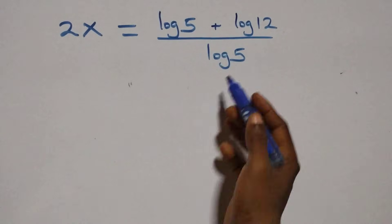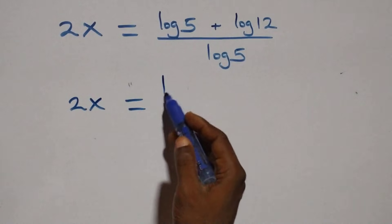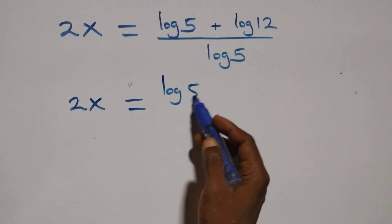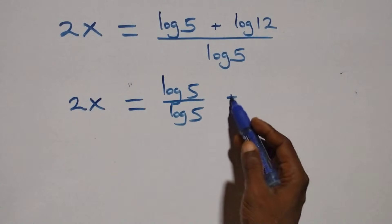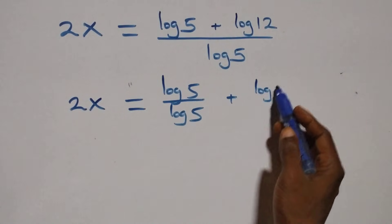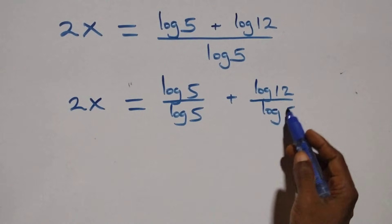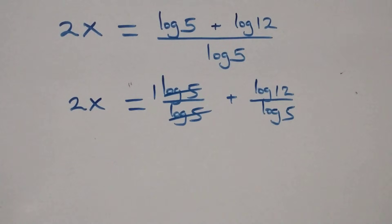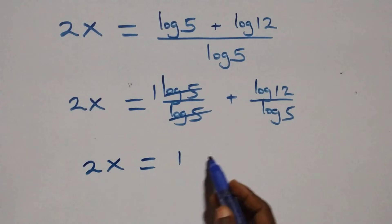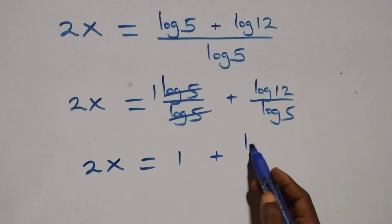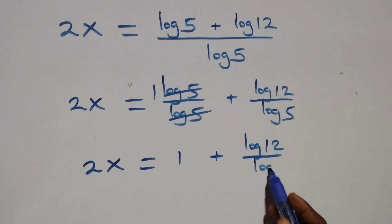Next step: we separate this into two fractions, giving 2x equals log 5 over log 5, plus log 12 over log 5. Now log 5 over log 5 cancels to give 1, so this becomes 2x equals 1 plus log 12 over log 5.